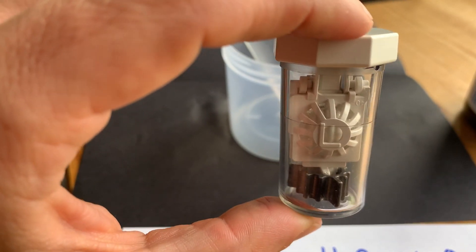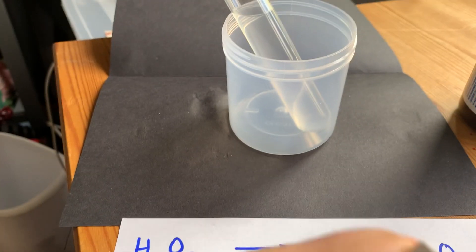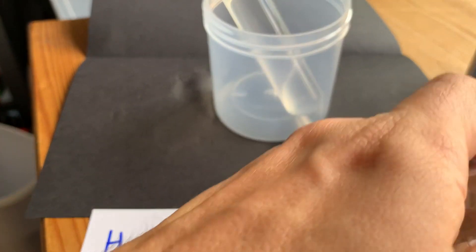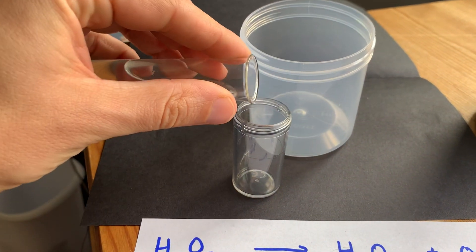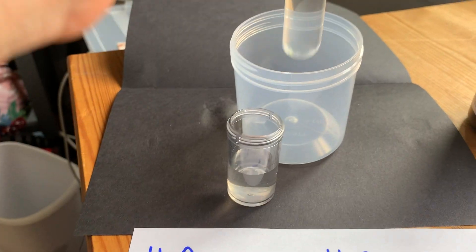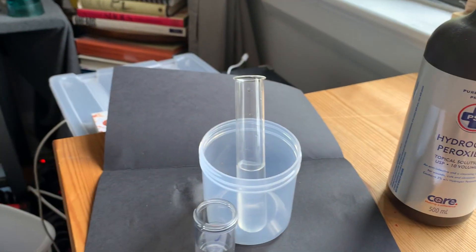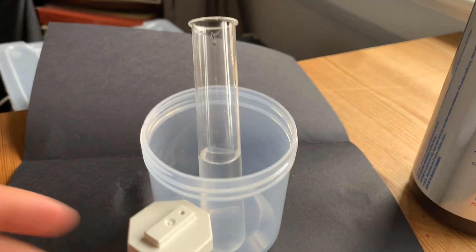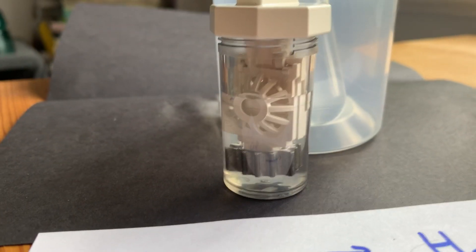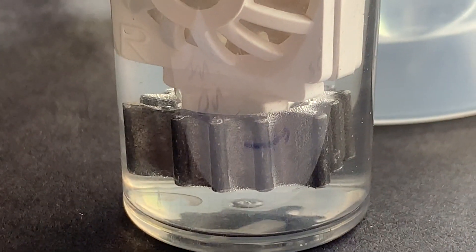I'm just going to take the lid off of that. I'm going to pour some hydrogen peroxide into the plastic, and then I'm going to resubmerge that piece of metal. If we zoom in here, you might be able to see some bubbles coming off of it.